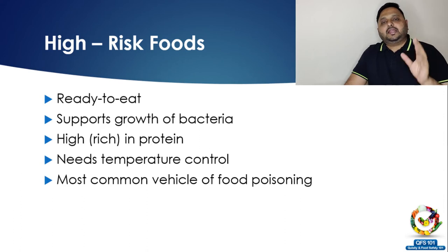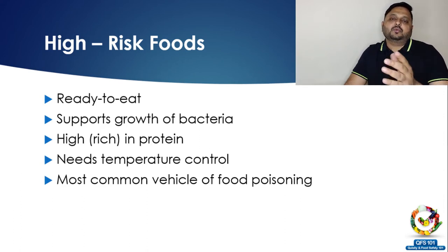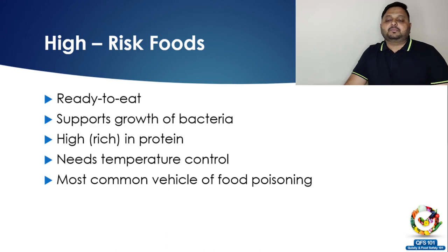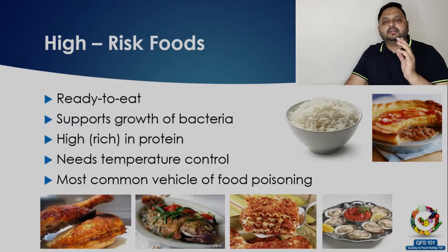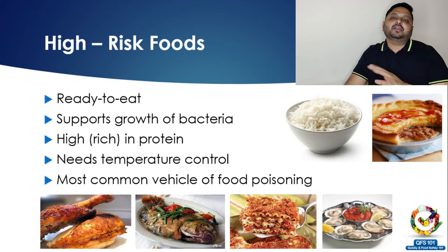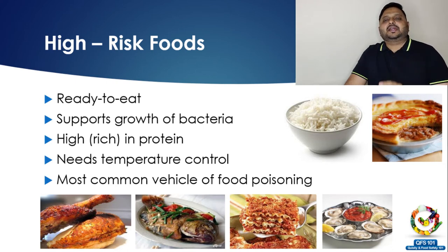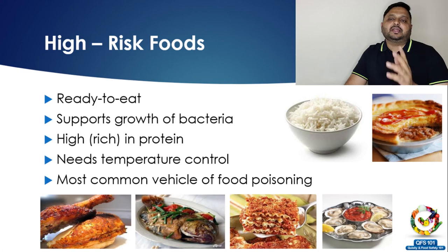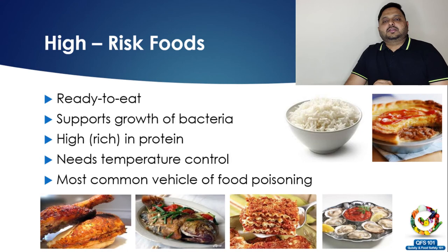High risk foods are not dangerous — contrary to what the word suggests. They simply have a high chance of microbial growth because of their properties. Their properties are: they are ready to eat, they support the growth of bacteria, they are rich in protein, they need temperature control, and they are the most common vehicle for food poisoning. These are very common food items that everybody consumes. If you take care of high risk food and don't allow contamination or bacterial growth, you can avoid food poisoning. But if they're left at room temperature for a long time, they can cause a high chance of food poisoning.